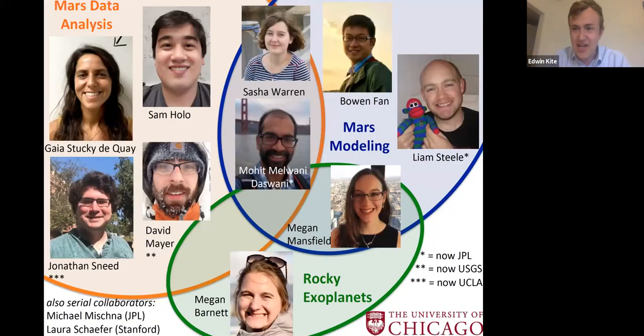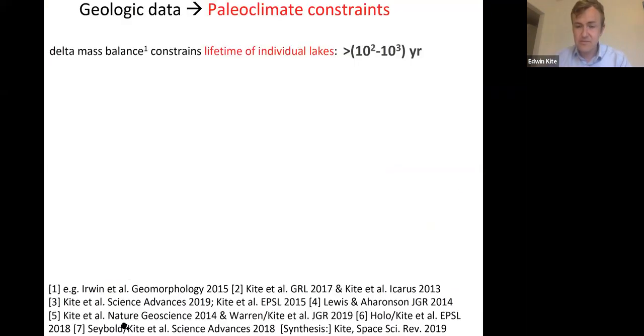Mapping and sequencing the ancient wet episodes isn't enough. We need quantitative summary parameters that can be used as input or test data for numerical models. How wet was it? How long was it wet for? How many wet events were there? And what was the intermittency of the climate? We can now get answers to many of these questions with help from digital terrain models of well-preserved river deposits. Our overall approach to the early Mars climate problem is to combine early Mars data analysis and early Mars modeling, including climate modeling, under one roof.